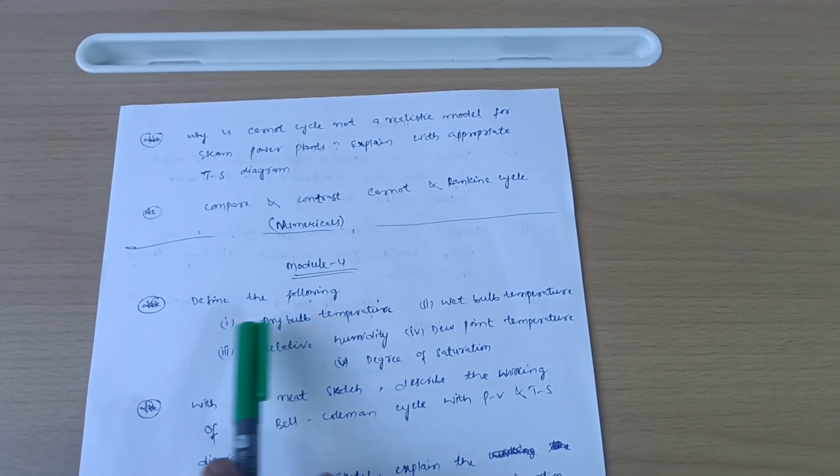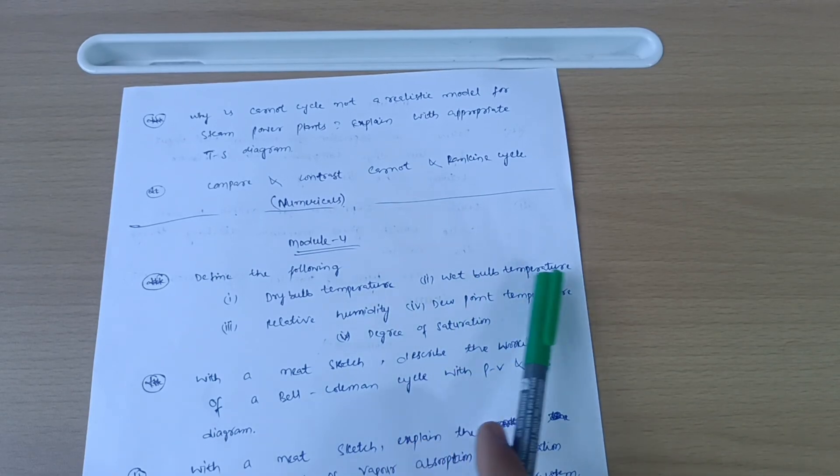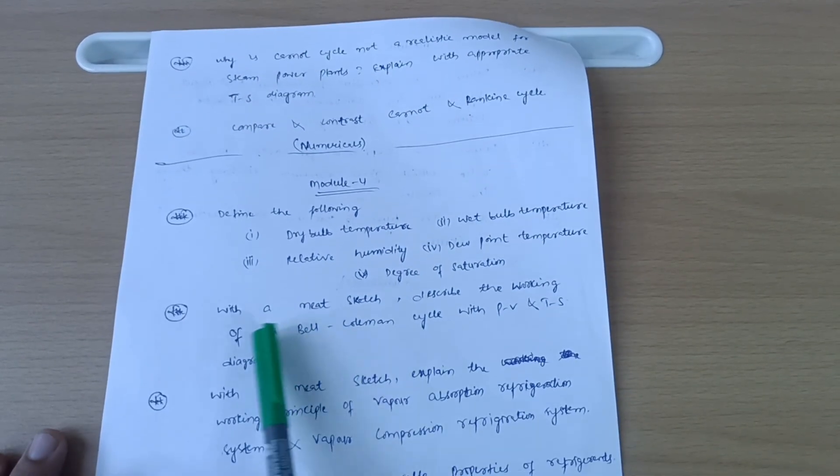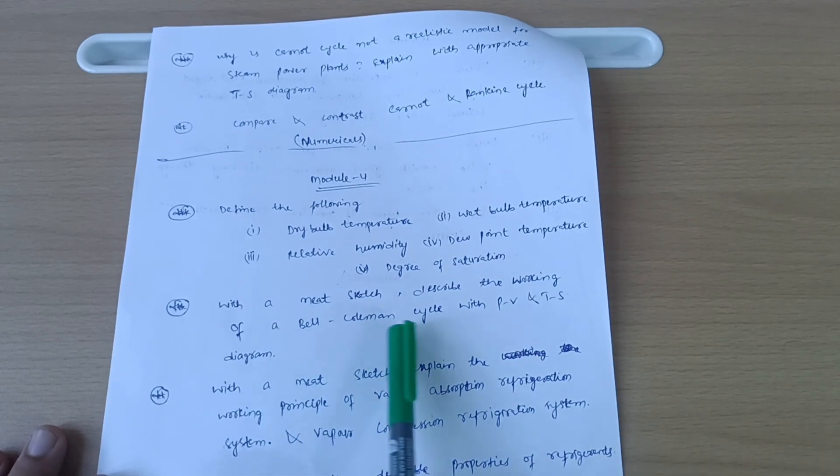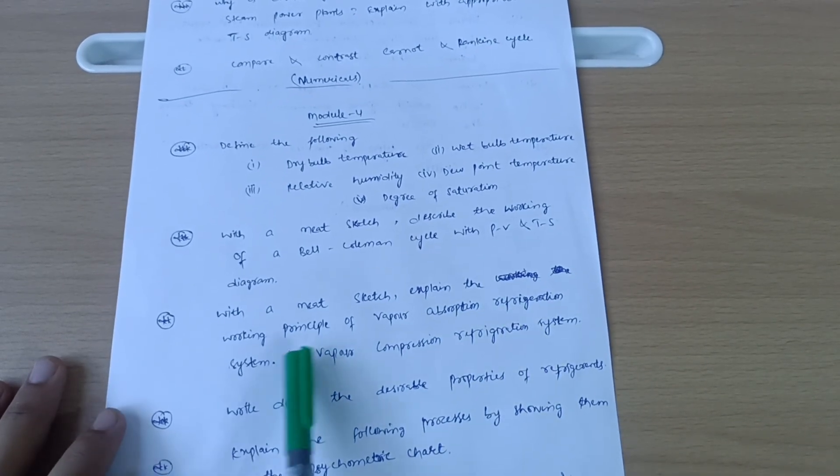Next is Module 4. Define the following - this is a super important question: dry bulb temperature, wet bulb temperature, relative humidity, dew point temperature, degree of saturation. With a neat sketch, describe the working of a Bell-Coleman cycle with PV and TS diagram. With a neat sketch, explain the working principle of vapor absorption refrigeration system and vapor compression refrigeration system.